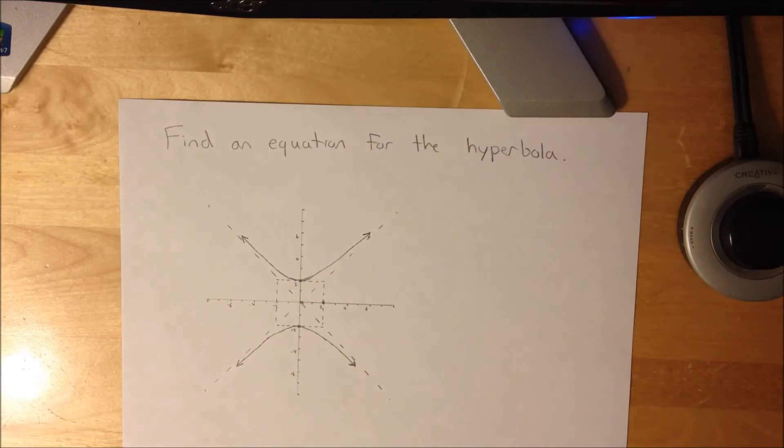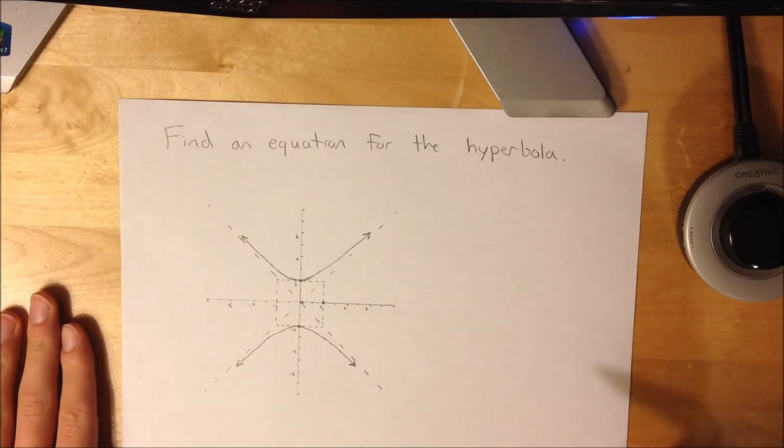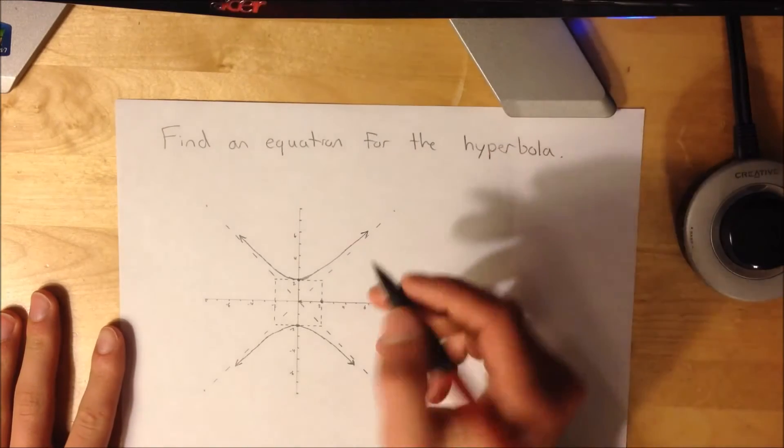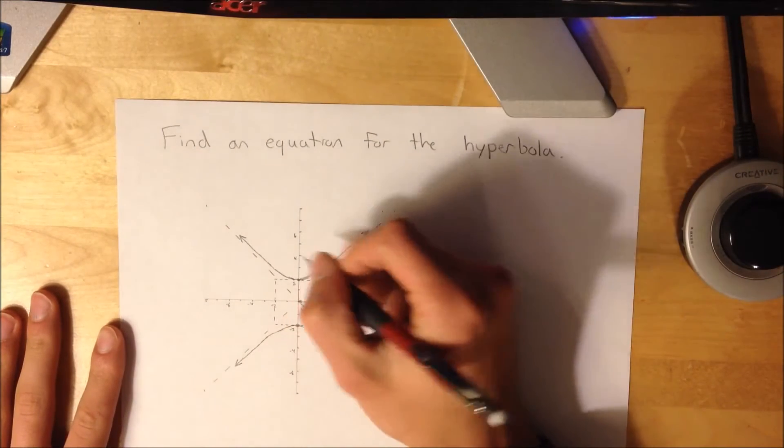This is how to find an equation for the hyperbola. It's probably kind of hard to see, but it is a vertical hyperbola.